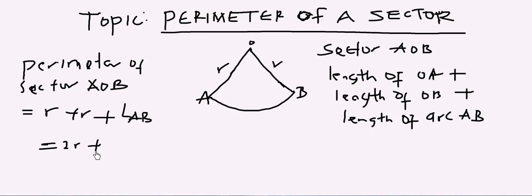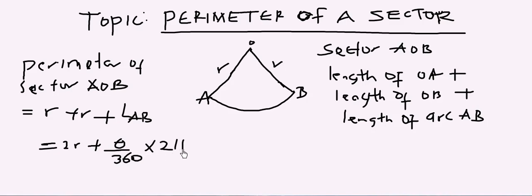This gives us 2r plus the length of the arc. The length of an arc is θ over 360 times 2πr. So this is the formula for the perimeter of the sector.